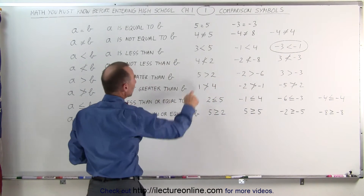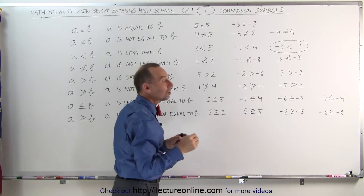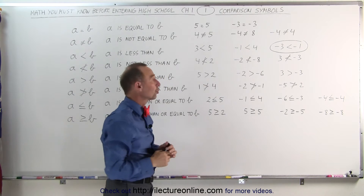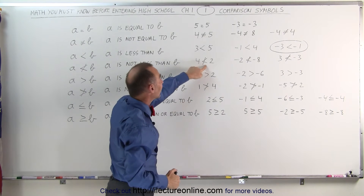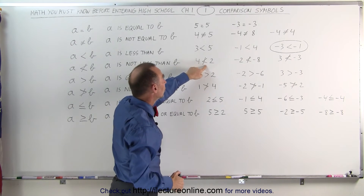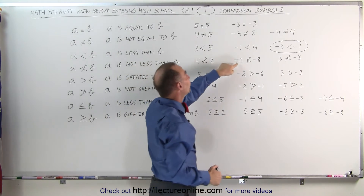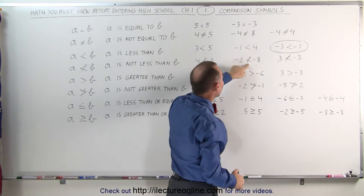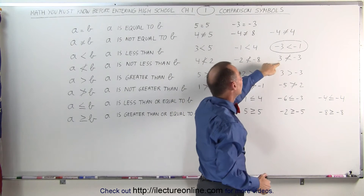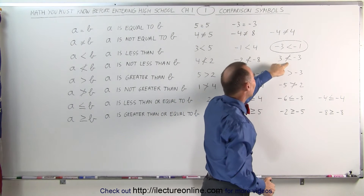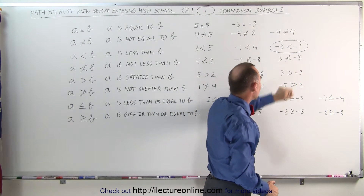When we put a line through the less than symbol, it means that the condition is not true. So 4 is not less than 2, negative 2 is not less than negative 8, and 3 is not less than negative 3.